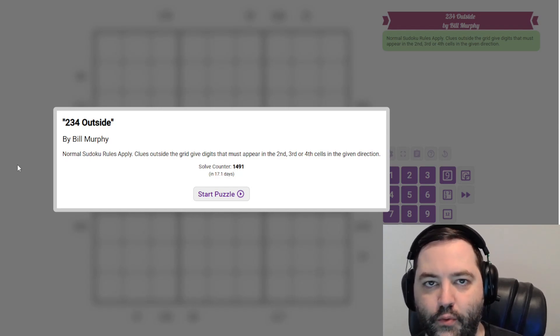Hi everyone, this is the GAS walkthrough for June 10th. I'm Philip Newman. Today I'm solving 2-3-4 outside by Bill Murphy.